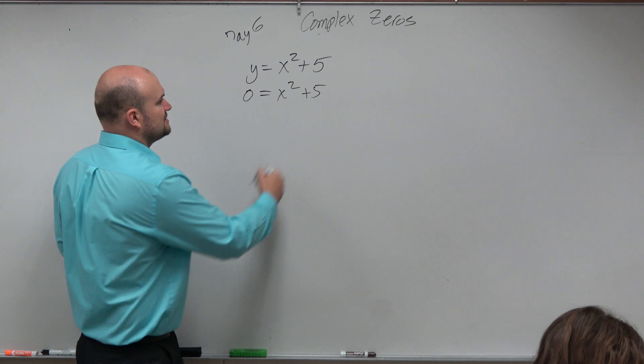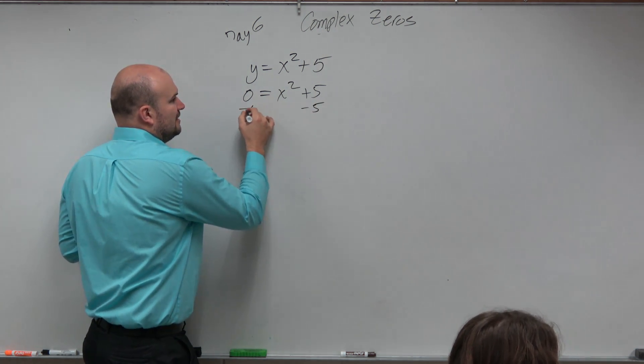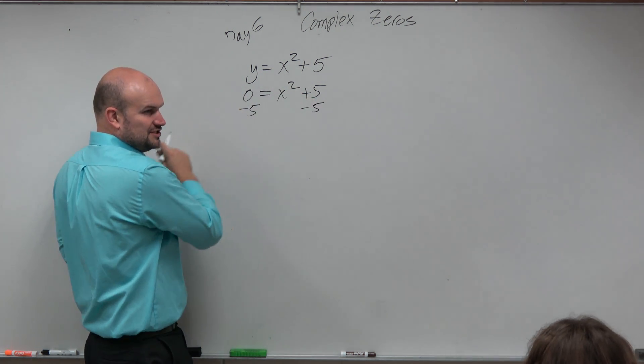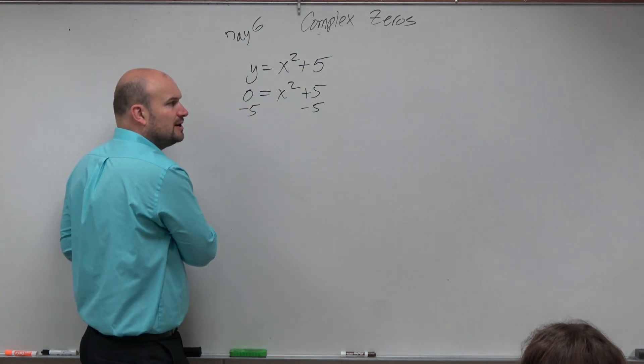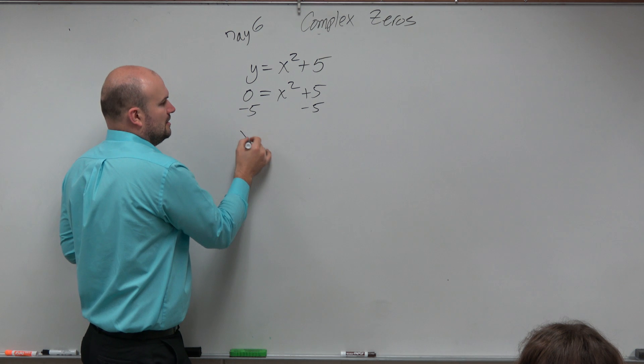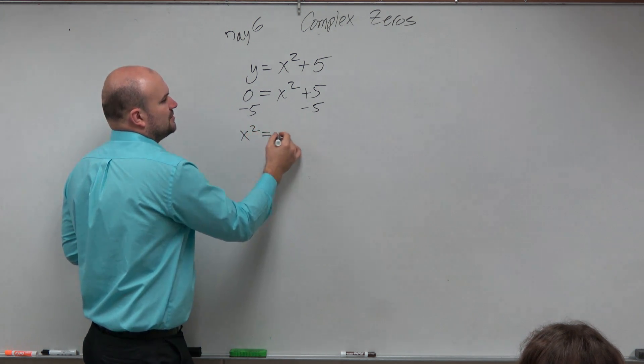To solve for x, I'll subtract the 5. This isn't factorable by difference of two squares, so I'm going to use what we call the square root method. I'll rearrange that: x² = -5.